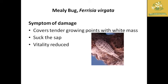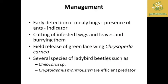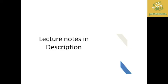The next pest is the mealy bug, with scientific name Ferrisia virgata. They cover tender growing points with white waxy material, suck sap, and reduce the vitality of plants in the orchard. Management includes early detection of mealy bugs using ant presence as indicators, cutting infected twigs and leaves and burning them. If incidence is high, release predators like Chrysoperla carnea and ladybird beetles such as Chilocorus species or Cryptolaemus montrouzieri.